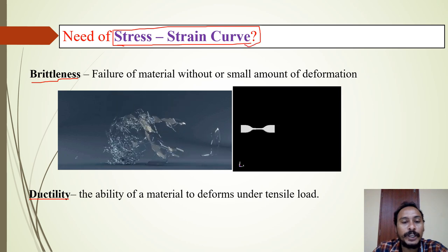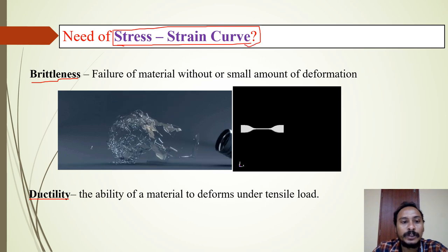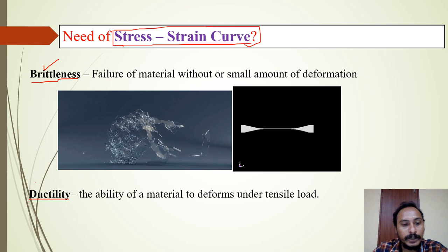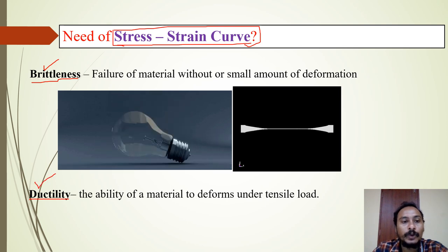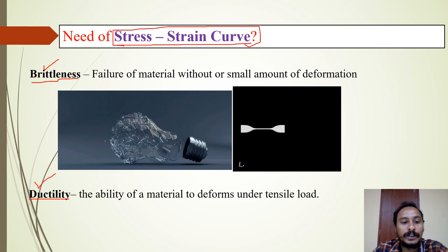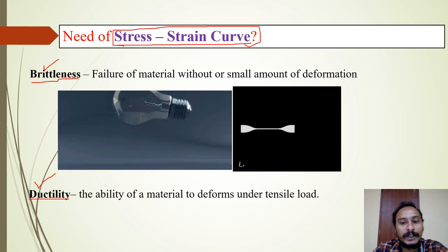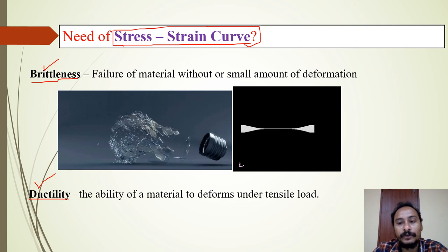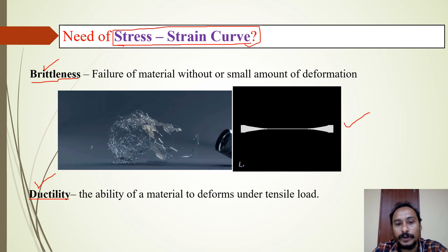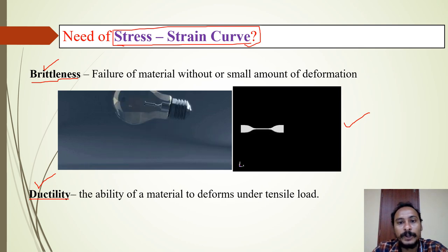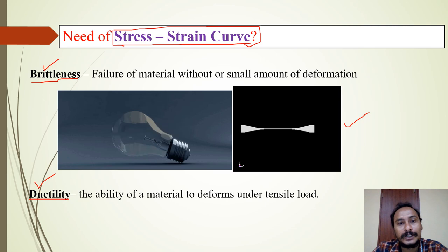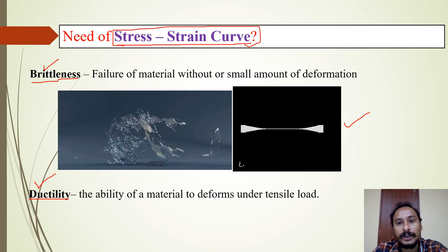From that graph, we come to know whether the newly developed material is brittle or ductile. If it is brittle, what is the maximum breaking load? And if it is ductile, what is the maximum deformation taking place before the failure of the product? These kinds of material properties we come to know by using a stress-strain curve.